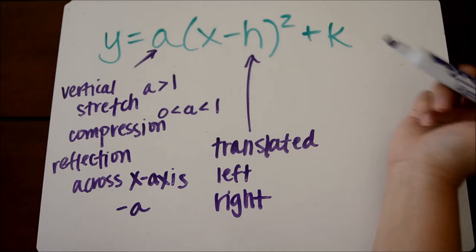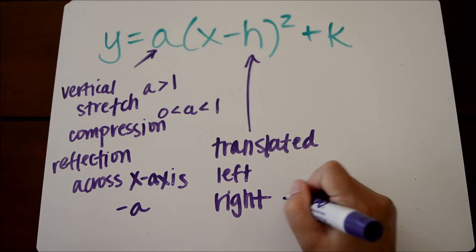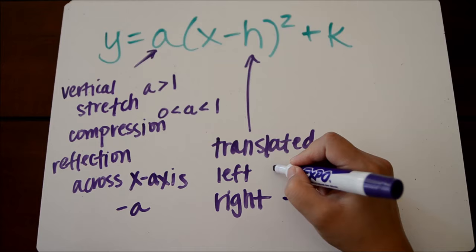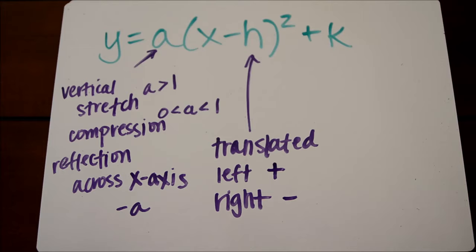So you'll notice that vertex form has a minus sign in here, so this is a little tricky. If that minus sign is still there, it actually means our graph moved to the right. If you see a plus sign there, it means our graph translated to the left. And I'll talk about that a little bit more on our next slide, because that's a little counterintuitive.